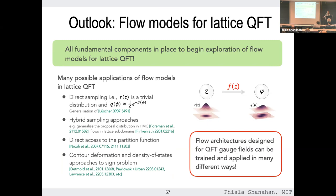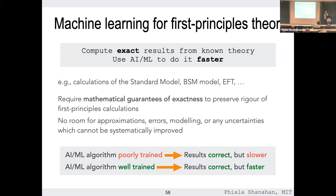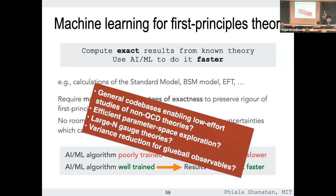This is a reminder that sampling is just one application. There are many different ways to use these approaches. From the perspective of this collaboration, I'm hoping what comes out includes general code bases enabling efficient study of non-QCD theories, very efficient parameter-space exploration, and large-N theories — we've gone past N equals 500, and this turns out to be a very nice sampling approach for large-N theories. Variance reduction for global observables is the type of thing you can get with contour deformation approaches. I hope there'll be other ideas to add to this list.